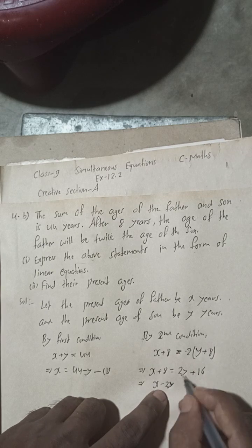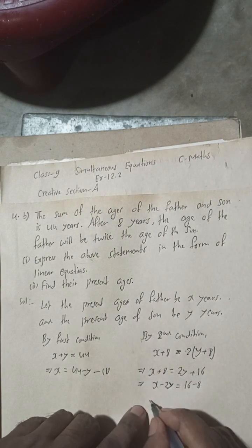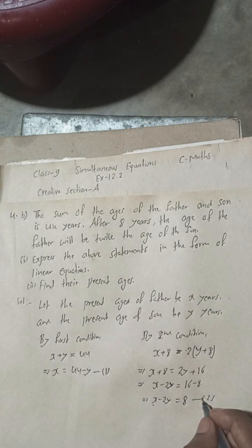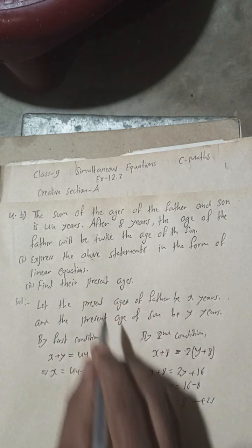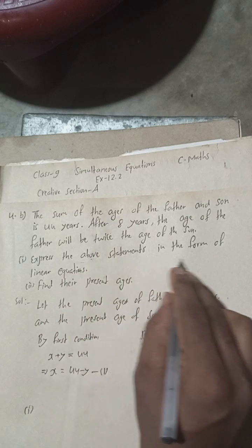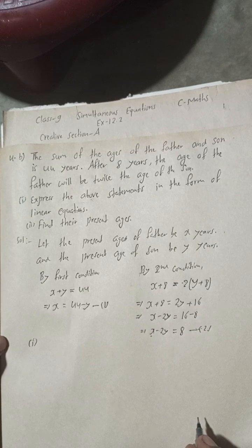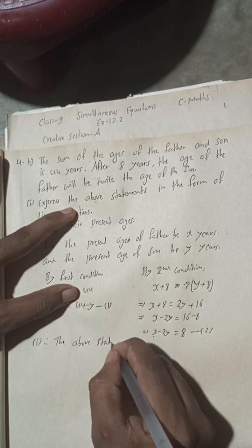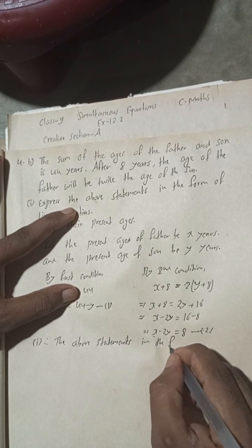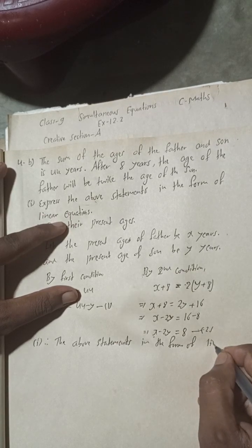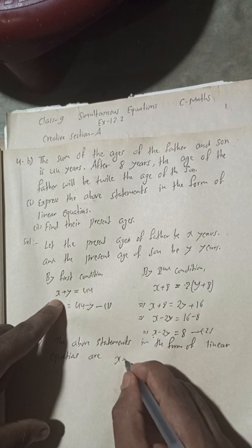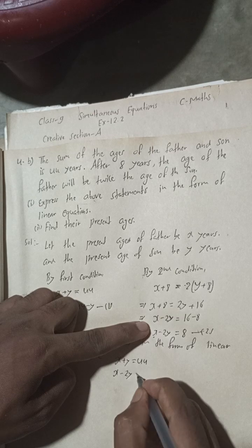So X minus 2Y: when 2Y moves to the left side it becomes minus 2Y, and 16 minus 8 gives 8 on the right side. So X minus 2Y is equal to 8. This is our equation 2. We now have two linear equations.